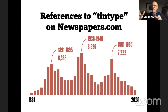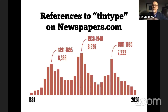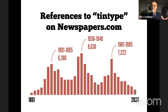The term tintype has a long life within our vocabulary. At newspapers.com, there are really three spikes over the last 150 years. The first real spike is in the 1890s — close to 6,400 references between 1891 and 1895. Then another spike between 1936 and 1940, which happens to be when Dr. Lord was in the Army before World War II. And then yet another spike between 1981 and 1985 — my theory is that's when collectibles were taking hold and tintypes were an item.